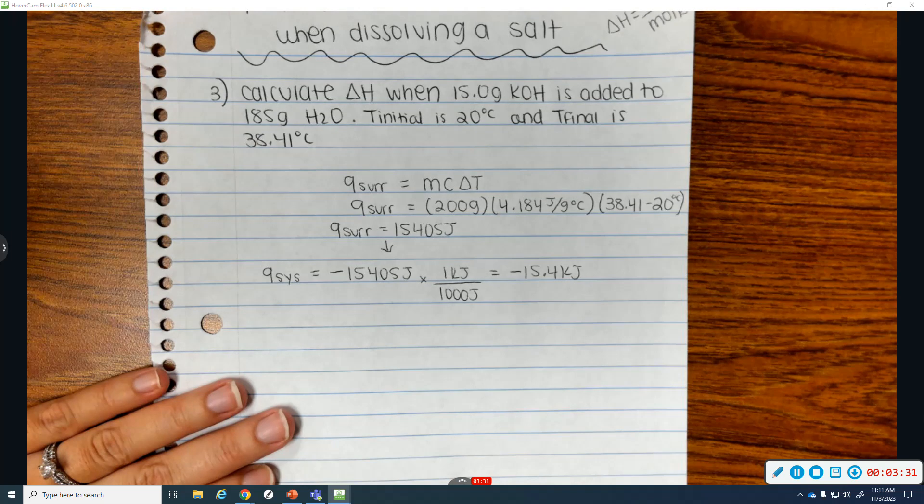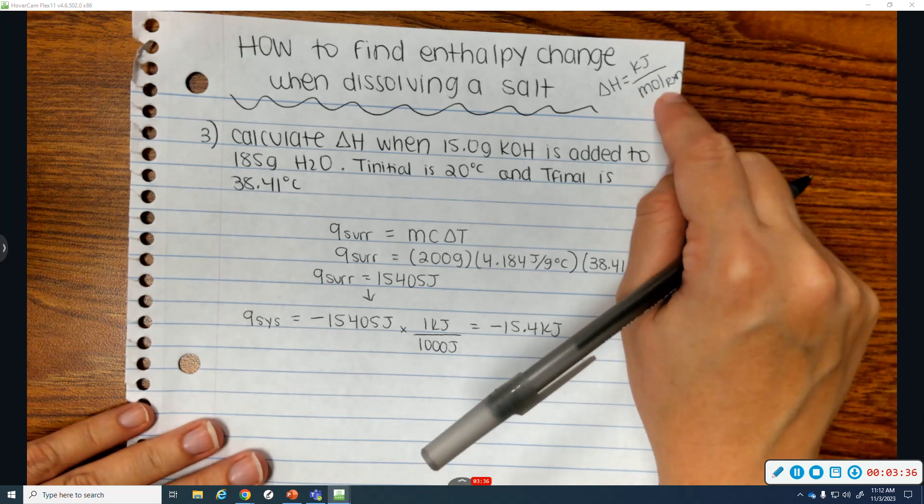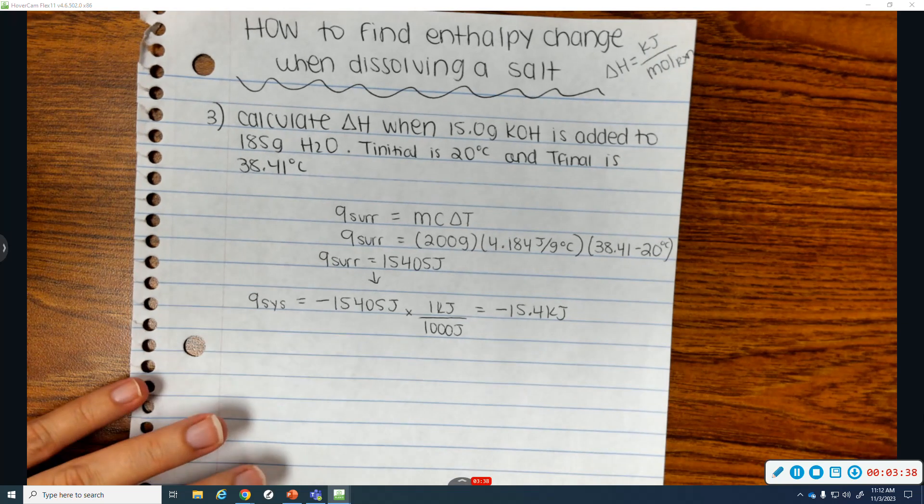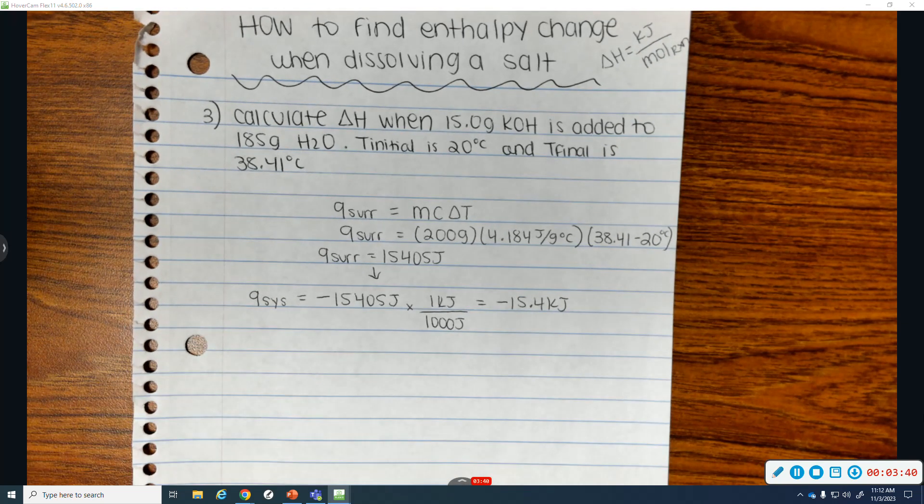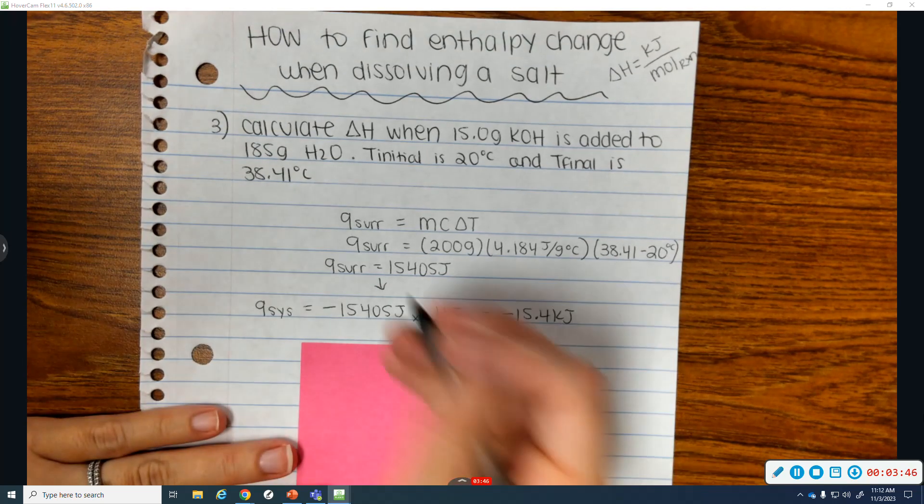Because again, you always get the temp of the surroundings. Now, the unit for enthalpy is kilojoules per mole of reaction. And when dissolving with water, this can confuse students. So when you write a dissolving equation, this is the dissolving equation.